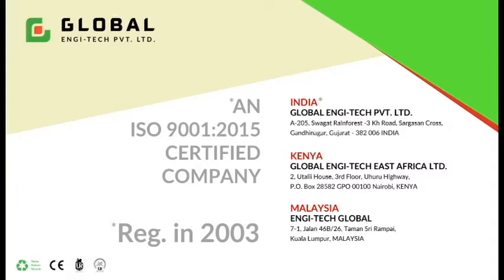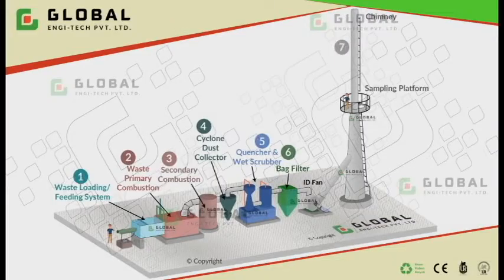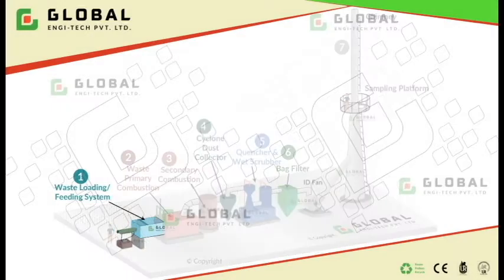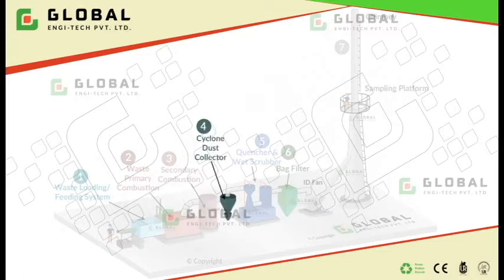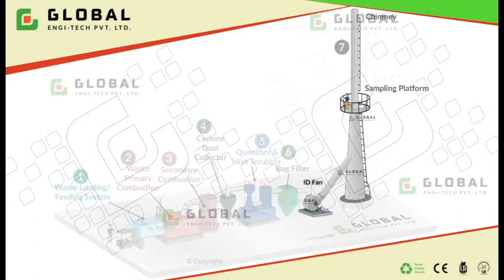Global and She Tech Private Limited. This is our A-type incinerator — a normal incinerator system. This system includes a waste loading and feeding system, waste combustion chamber, secondary combustion chamber, cyclone dust collector, scrubbing system, and pollution control equipment, with smoke discharge via ID fan and chimney.